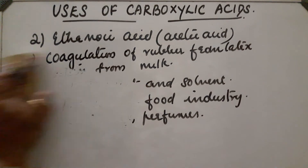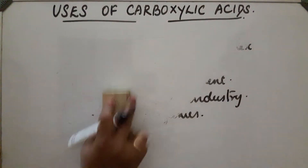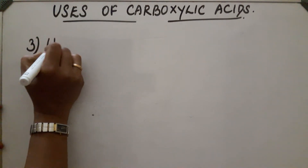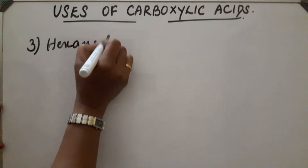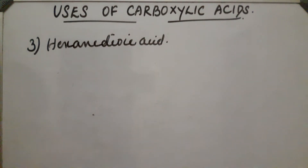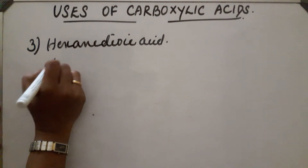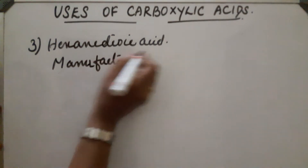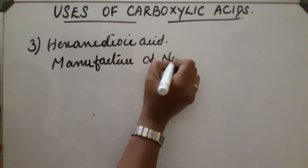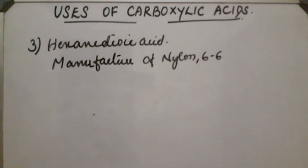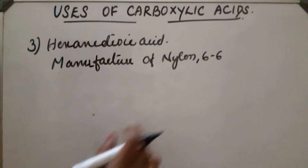Next is hexanedioic acid. It is an important compound in the manufacture of nylon 66.